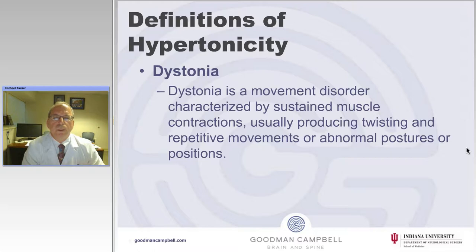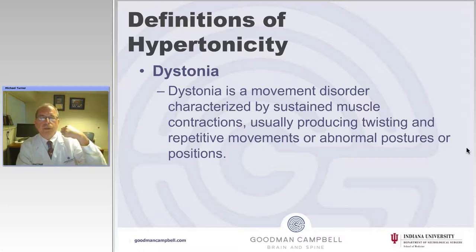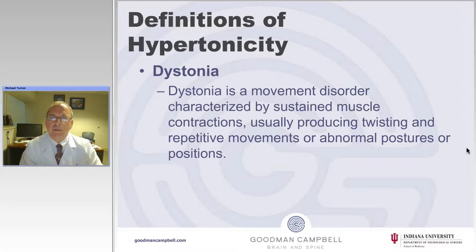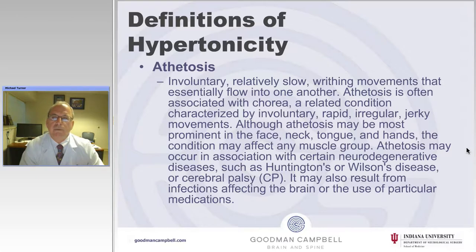Dystonia, on the other hand, is a movement disorder characterized by sustained muscle contractions, usually producing twisting and repetitive movements or abnormal postures. You can have a very stiff hypertonic arm that could be confused for spasticity, except it is not velocity-dependent — no matter how fast you move it, it fights you just as much. Dystonia can also present as classic cervical dystonia, with tonic contraction of the neck, or tonic contraction of any of the extremities.